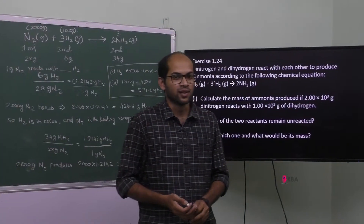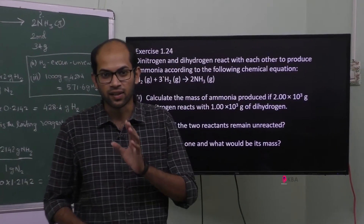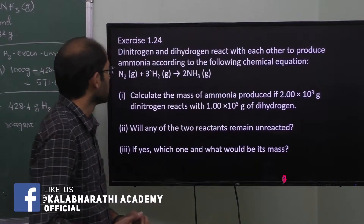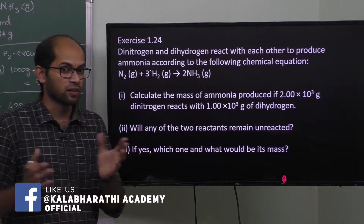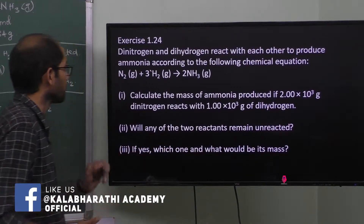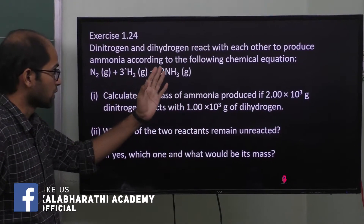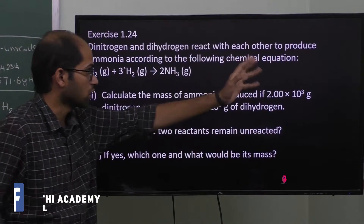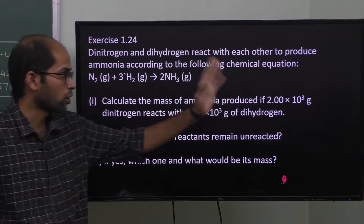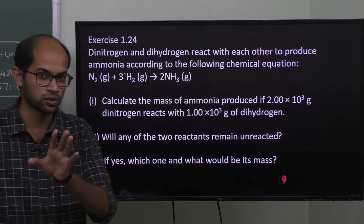Hello everyone. I am going to talk about the NCERT exercise problem 1.24. The first question is a limiting reagent problem. Dinitrogen and dihydrogen react with each other to produce ammonia according to the following chemical equation — Haber's process.